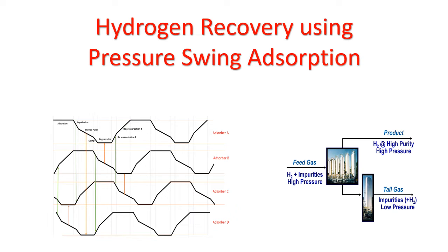The world is presently looking for a sustainable energy source, and hydrogen has been identified as one of the clean energy sources for the next century. Depending on the method of production, there are different grades of hydrogen: gray hydrogen, blue hydrogen, and green hydrogen. Hydrogen generated through steam cracking or other methods in refineries and petrochemicals is known as gray hydrogen. Gray hydrogen can be converted into blue hydrogen when the carbon dioxide generated in the process is captured and stored.